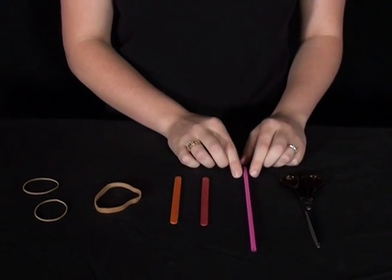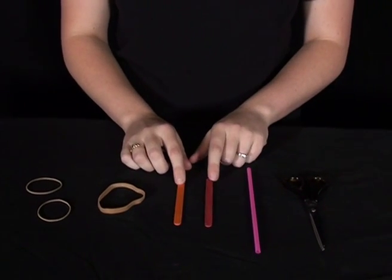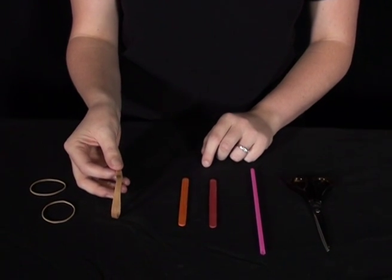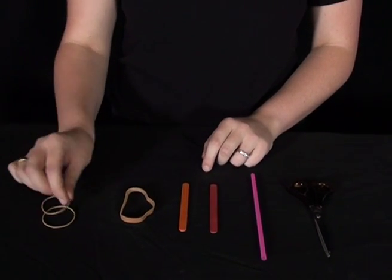You're going to need a pair of scissors, a plastic straw, two pop sticks, a large thick rubber band like this one, and two smaller rubber bands.